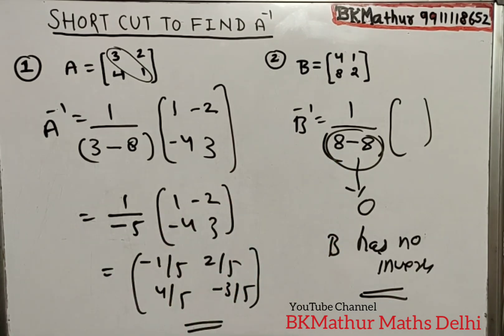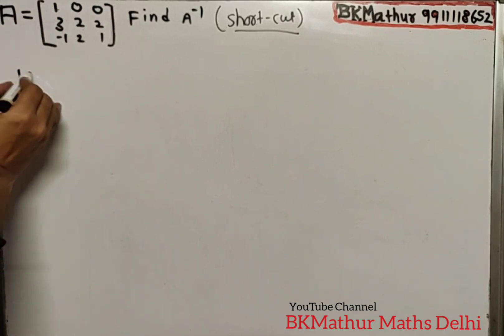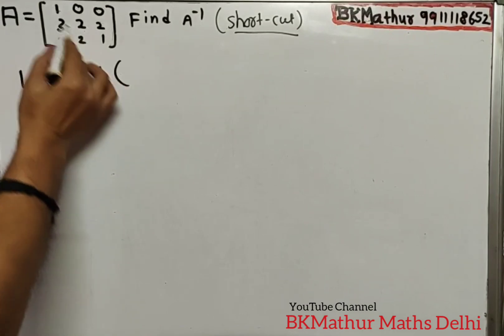Now let's move to 3×3. I hope this is clear to you. Here you have A inverse of a 3×3 order matrix by shortcut. First, calculate its determinant as you know how, expanding along R1.